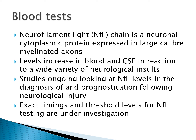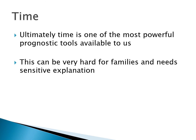Blood tests may also become increasingly useful in the future. Neurofilament light chain is a neuronal cytoplasmic protein expressed in large-calibre myelinated axons — its levels increase in the blood and CSF in reaction to a wide variety of neurological insults. There are currently studies ongoing looking at neurofilament light chain levels in the diagnosis of and prognostication following neurological injury; the exact timings and threshold levels are currently under investigation. Ultimately, time is one of the most powerful prognostic tools available to us — a patient not waking up on day two following a cardiac arrest is very different from a patient not waking up on day ten. However, as families watch us watch their relatives, it can be very hard for them and needs very careful and sensitive explanation as to why we are seemingly not doing anything to try and improve outcome.